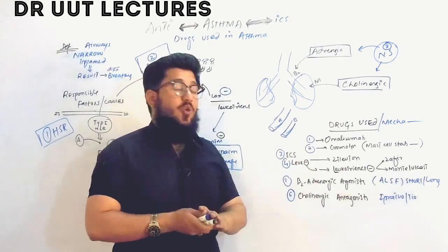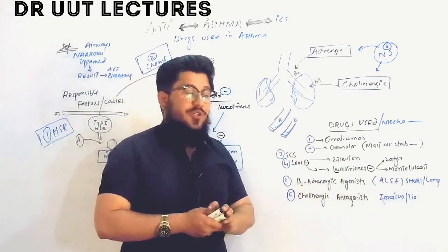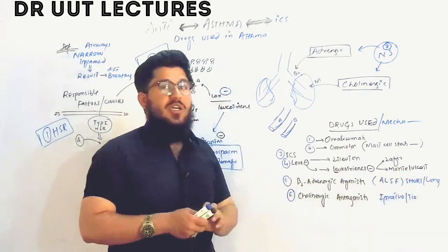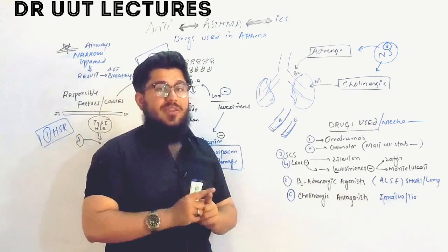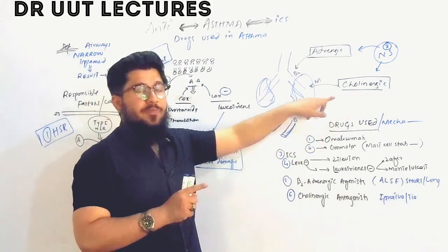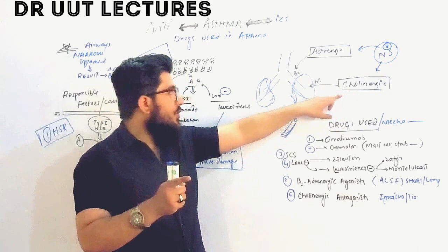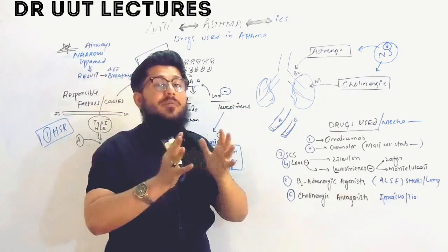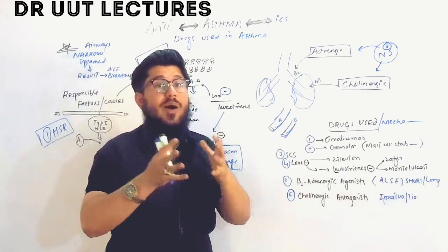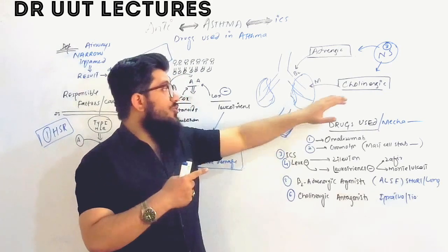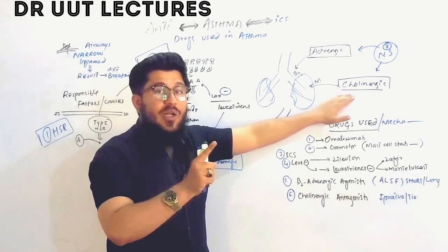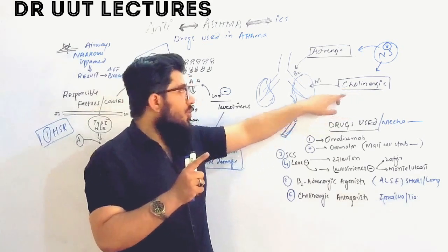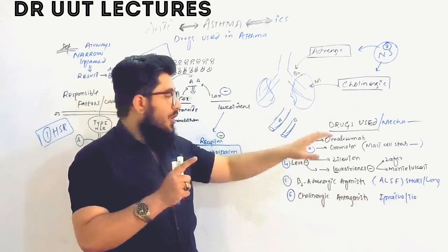Now the last one, the sixth one: cholinergic antagonists. The drugs are ipratropium and tiotropium. These are actually antagonizing the effect of the cholinergic supply. The cholinergic supply was responsible for stimulating the muscarinic receptors to cause bronchospasm. We don't need bronchospasm, so we take drugs that counter or antagonize the cholinergic supply.